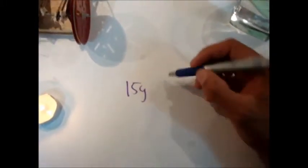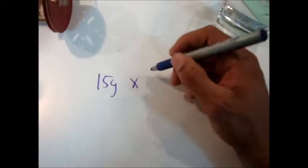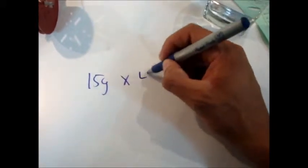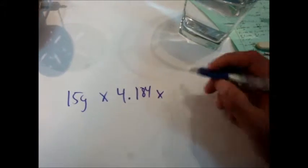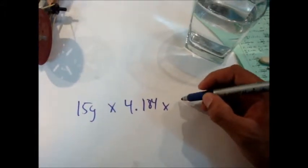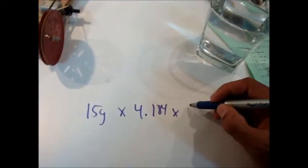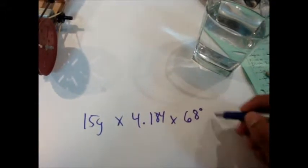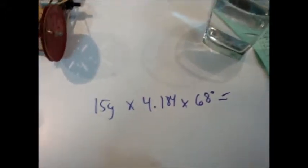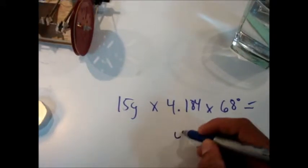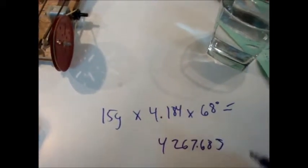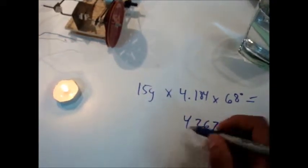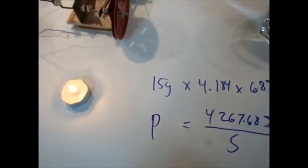which is 15 grams of water, which is how much I'm using, times the C value of water, which is 4.184. You can find that online. Multiplied by the change in temperature. So I'm going to bring it from 32 to 100 degrees, which is a boil, and that's 68. And basically, that gives me 4,267.68 joules. And I can divide that by the time it takes in seconds, and that will give me the power in watts.